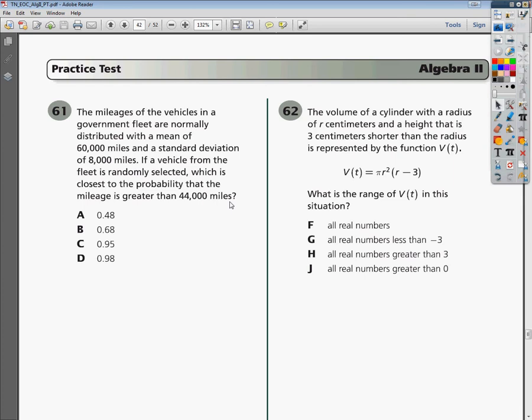The question says the mileages of vehicles in the government fleet are normally distributed with a mean of 60,000 miles and a standard deviation of 8,000 miles. If a vehicle from the fleet is randomly selected, which is the closest to the probability that the mileage is greater than 44,000?